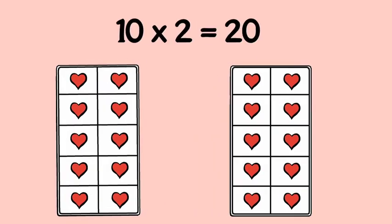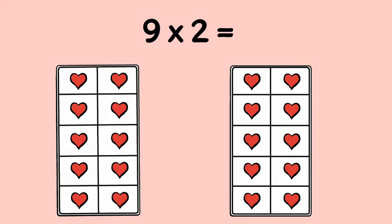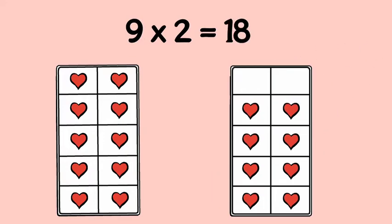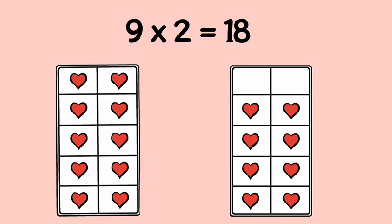You know that 10 × 2 is 20. To find 9 × 2, just take away one group of 2. 20 minus 2 is 18, so 9 × 2 is 18.